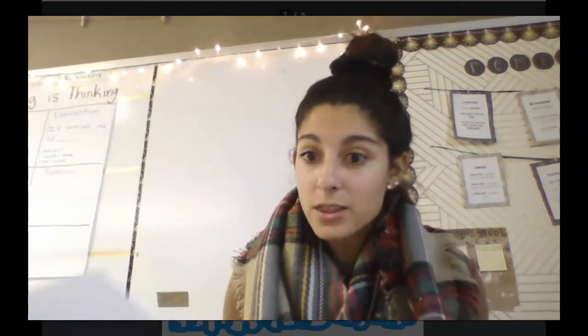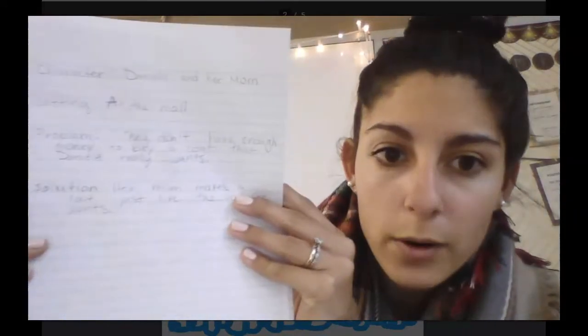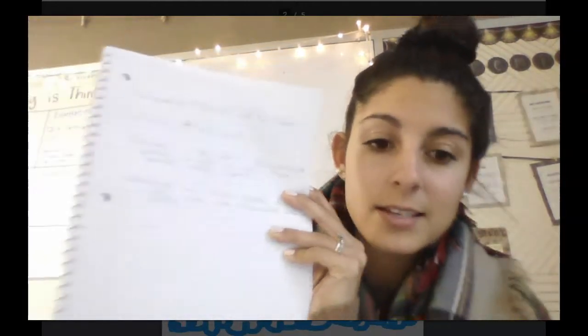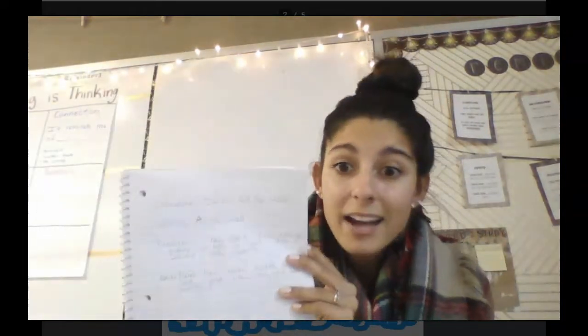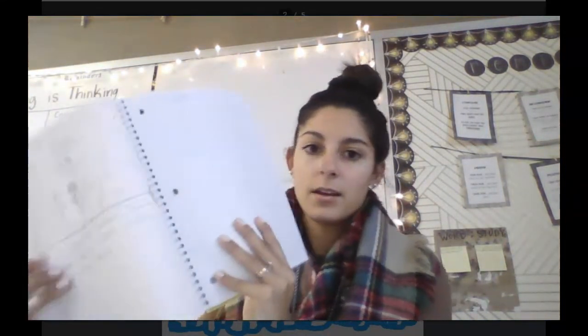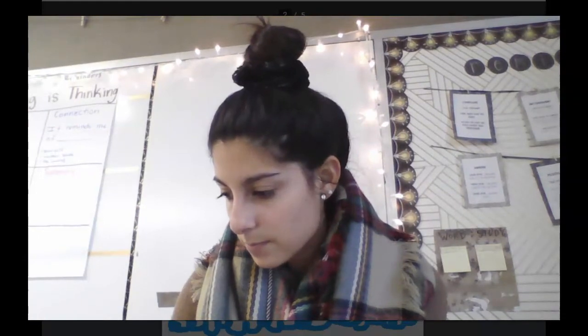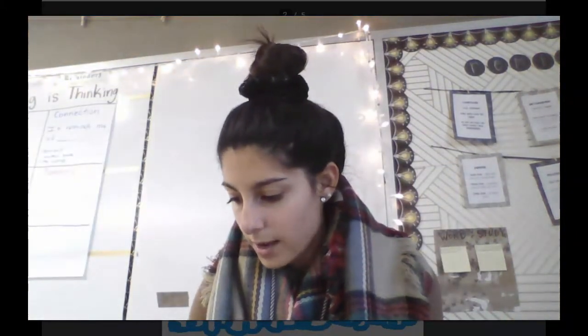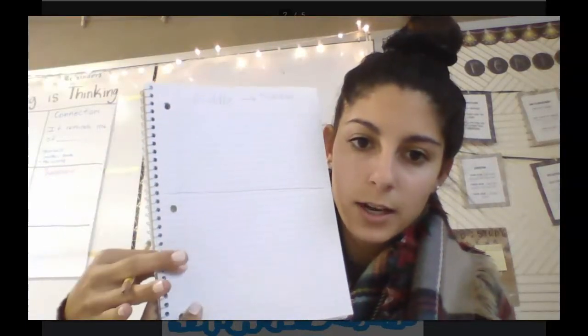Write the word 'middle' at the very top of your next page. The middle tells about the problem. My problem — from my graphic organizer from Monday — is that they don't have enough money to buy a coat that Daniela really wants. You might also want to write the word 'problem' as a reminder. Draw a line in the middle of your paper to make space for a picture on top and writing below.